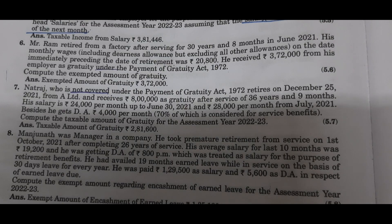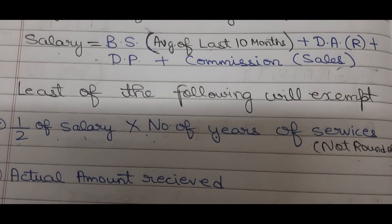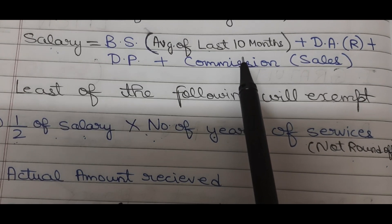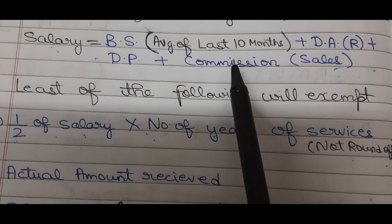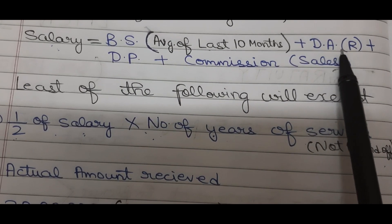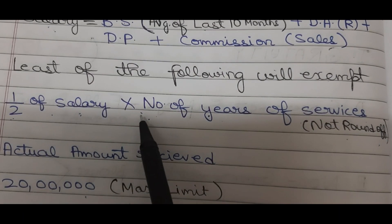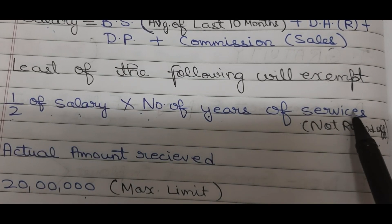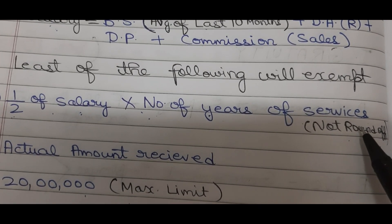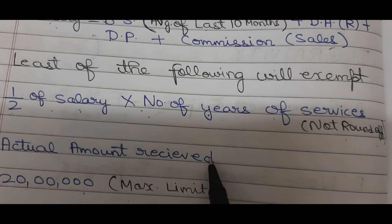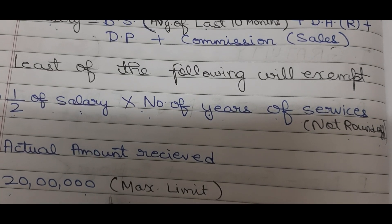Compute the taxable amount of Gratuity for assessment year 22-23. This is the Gratuity Not Covered condition, so first salary will be calculated: Basic salary average of last 10 months — meaning the 10 months preceding the month of retirement — plus Dearness Allowance on retirement, plus Dearness Pay, plus Commission on Sales. Least of the following will be exempt: half of salary into number of years of service, actual amount received, and the maximum limit of ₹20 lakh.